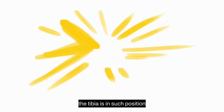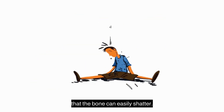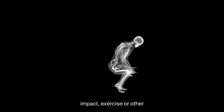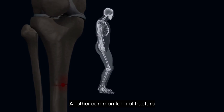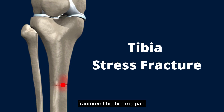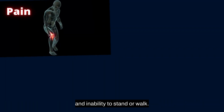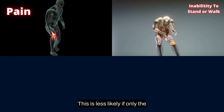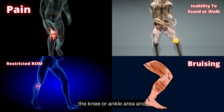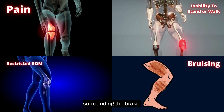If a person is hit by a vehicle, the tibia is in such a position that the bone can easily shatter. Knee fractures in the tibia can develop due to physical trauma or any type of force, such as an impact exercise. A stress fracture in the tibia is another common form of fracture. The most typical symptoms of a fractured tibia are pain and inability to stand or walk, restricted range of motion in the knee or ankle area, and bruising or skin discoloration surrounding the break.